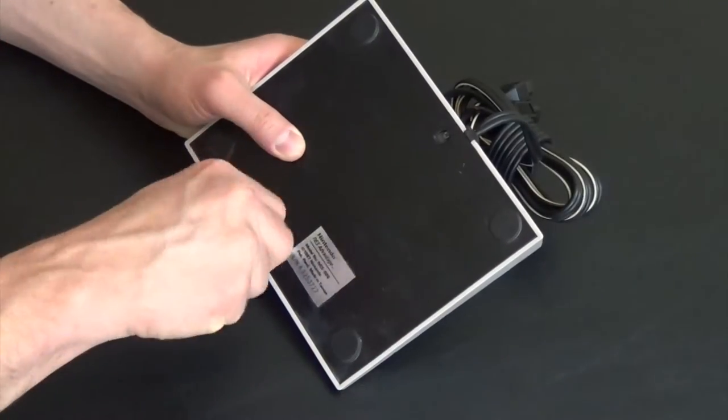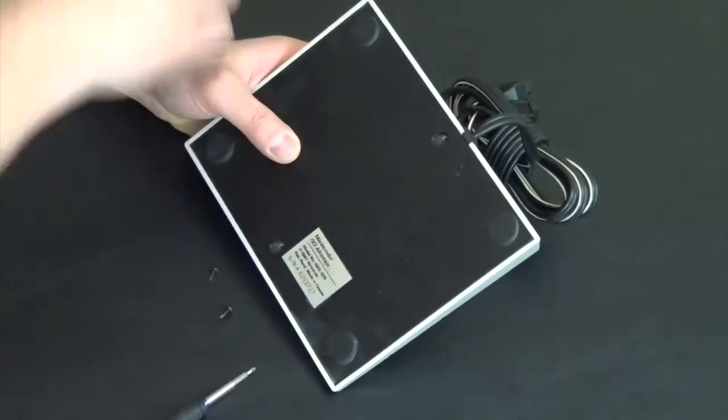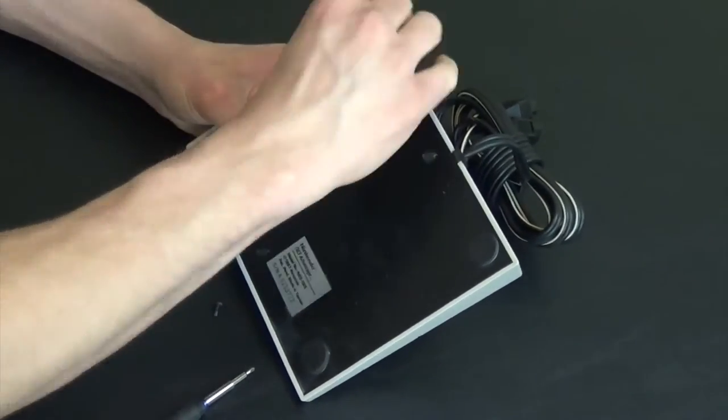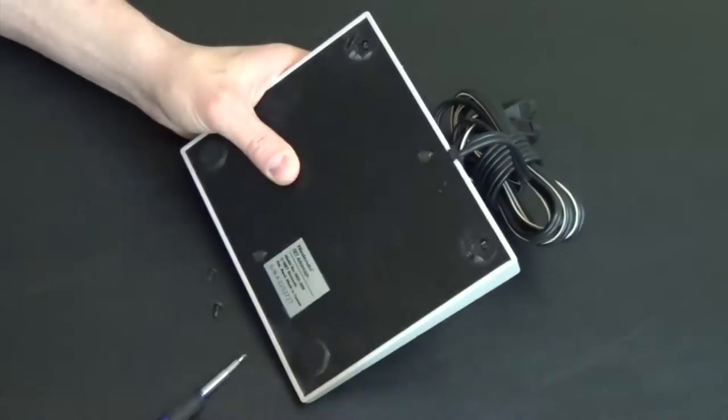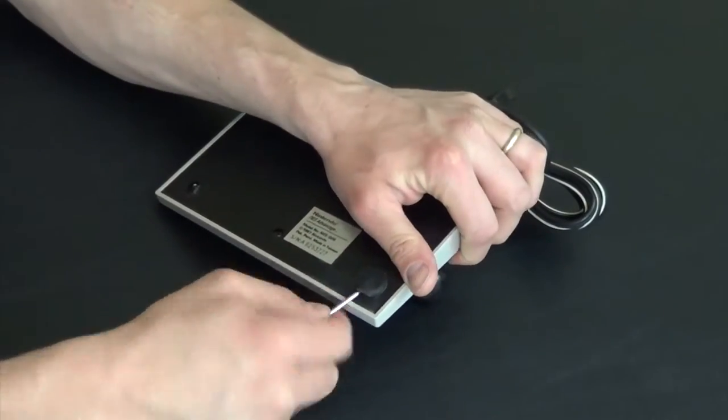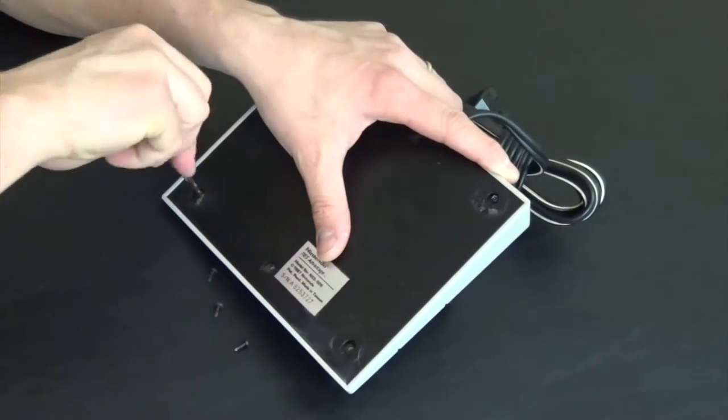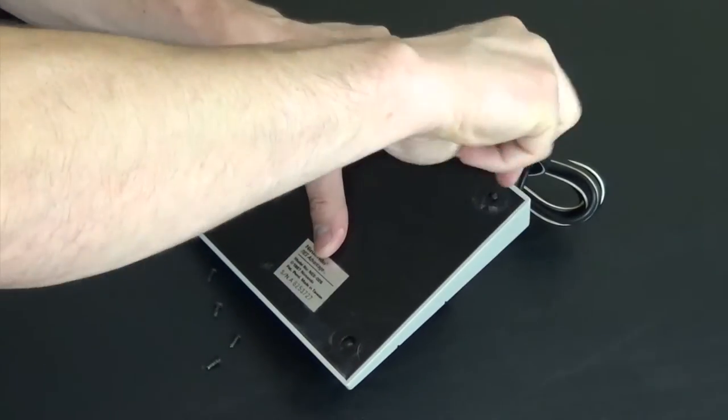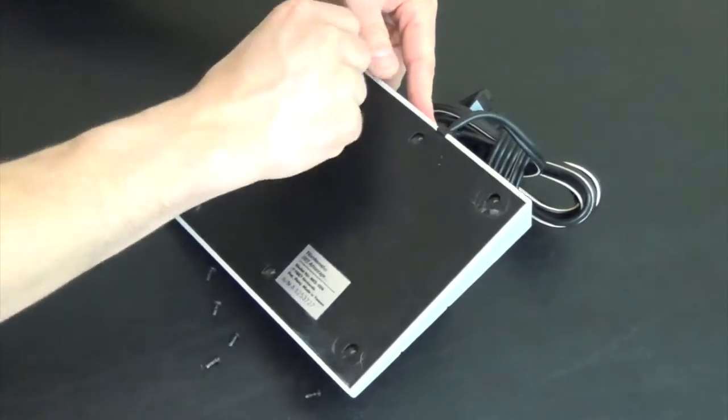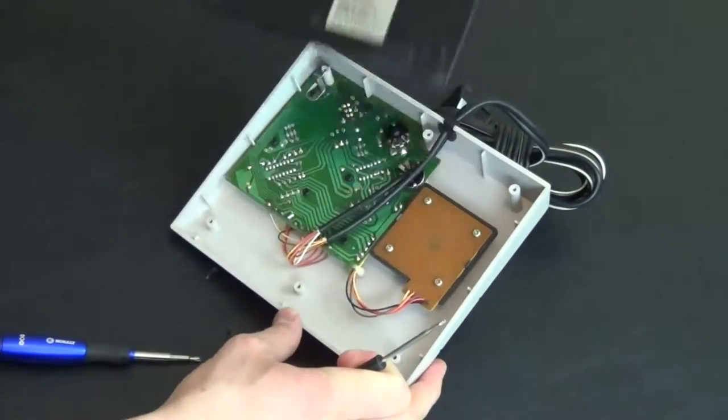First you'll want to flip over your NES Advantage and remove the two visible screws. Next take your screwdriver and remove the plastic pads that cover the four hidden screws. Next take out the four hidden screws. I would suggest getting a cup to hold all your screws so that you don't lose them during the process. Finally use your screwdriver to remove the bottom base of the NES Advantage.